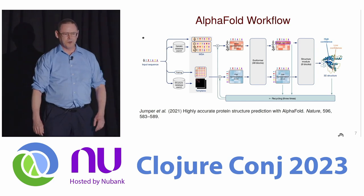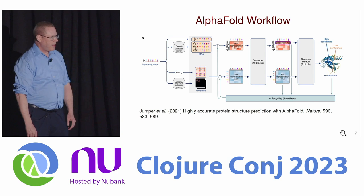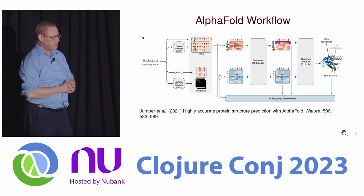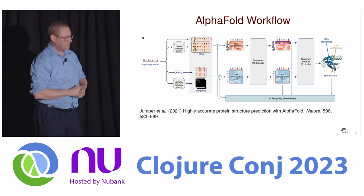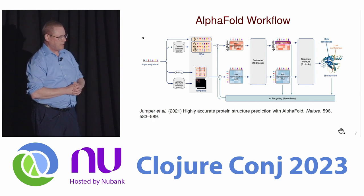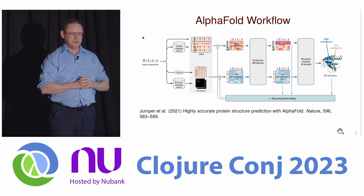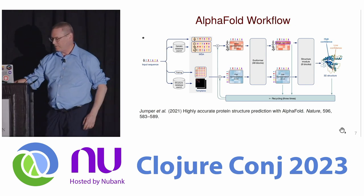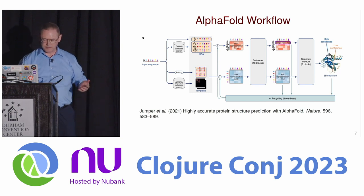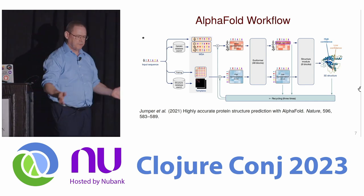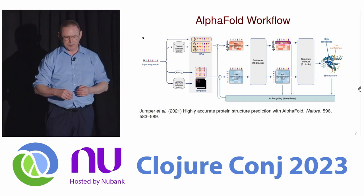This is the workflow for AlphaFold. You start with an amino acid sequence of the protein you want to fold, shown on the left, and after several intermediate states, the output is a folded model of the protein structure. The blue areas in this model are colored by confidence: blue indicates high confidence, while orange regions of low confidence are probably underrepresented in the sequence or structure database.